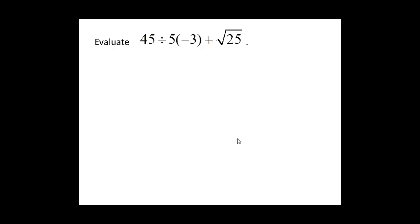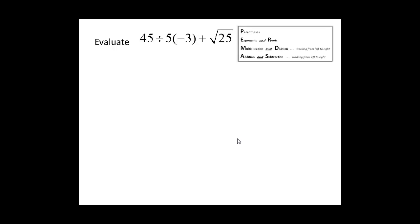We will evaluate forty-five divided by five times negative three plus the square root of twenty-five. We start by doing operations inside parentheses. The only parentheses contain negative three — there is nothing to calculate there. So we move to exponents and roots. The square root of twenty-five equals five, because five squared gives us twenty-five.